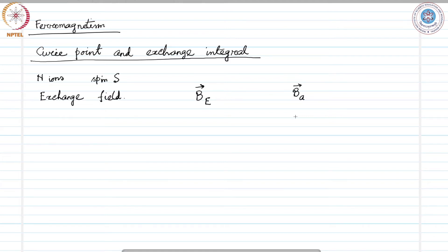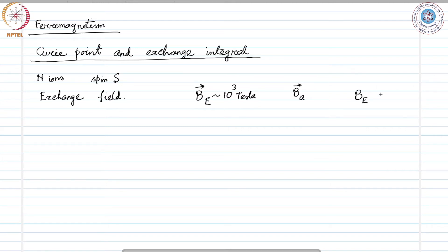The magnitude of this exchange field can be as high as 10³ tesla, which is an extremely high magnetic field — 1000 tesla is extremely high. This internal exchange field could be that high in magnitude, and we assume this exchange field to be proportional to the magnetization of the material, which is given as M. So B_E is proportional to M, the magnetization.